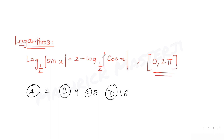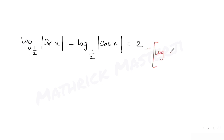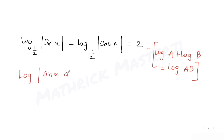Applying the ideas of logarithms first: we take log |cos x| to the base 1/2 and bring it to the other side. Since it is minus, it becomes plus. So we get log |sin x| to the base 1/2 plus log |cos x| to the base 1/2 equals 2. Using the formula log a + log b = log(a·b), addition becomes multiplication, giving us log |sin x · cos x| to the base 1/2 equals 2.